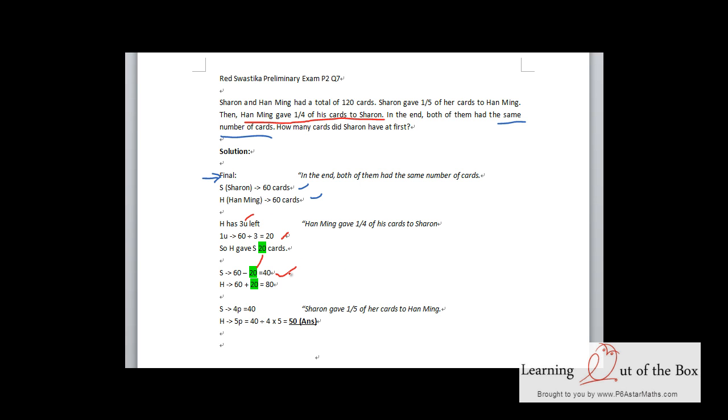And Han Ming should get another 20 more so that he has the initial number. So 60 plus 20 equals 80.